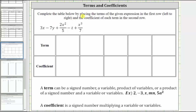We are asked to complete the table below by placing the terms of the given expression in the first row from left to right, and the coefficient of each term in the second row. For review, a term can be a signed number, a variable, a product of variables, or a product of a signed number and a variable or variables. Here are some examples of terms. A coefficient is a signed number multiplying a variable or variables.